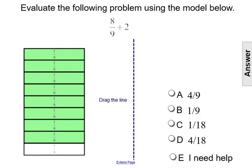The model we're given is representing 8/9. There is one rectangle divided into 9 equal parts and 8 of them are shaded.